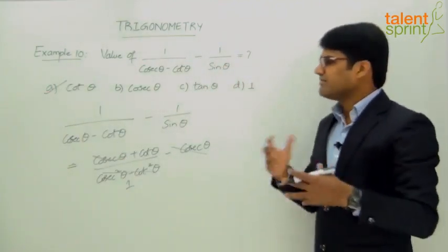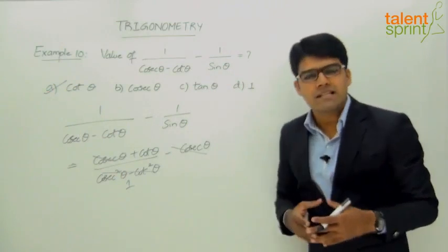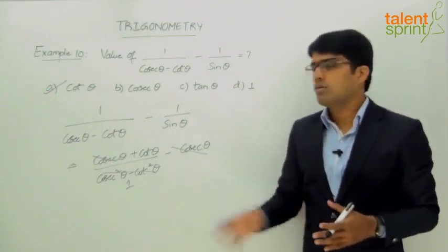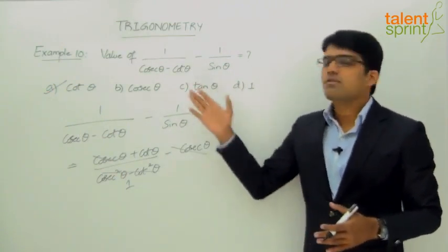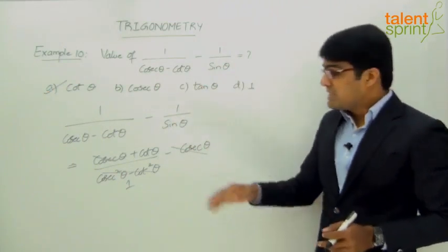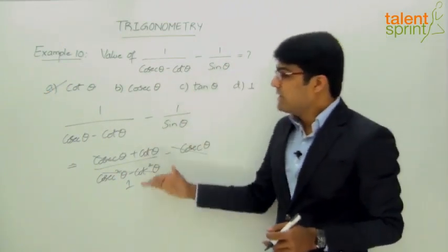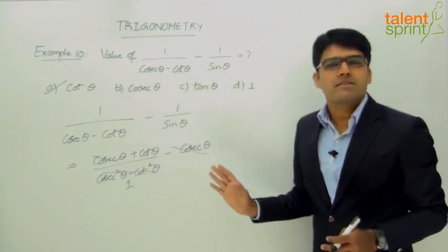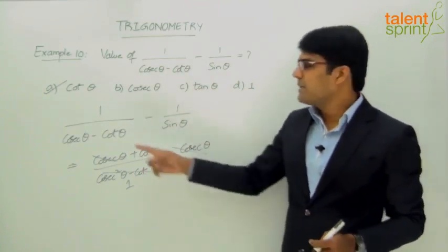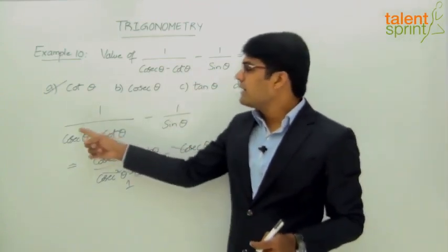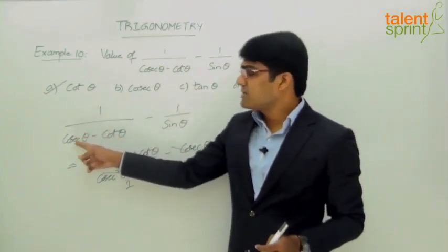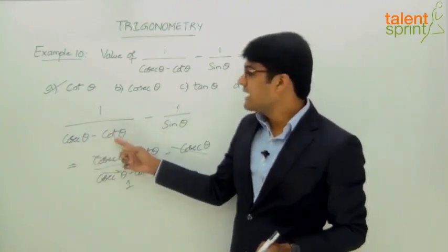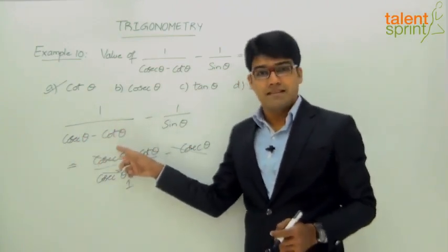Simply use algebraic and trigonometric formulae to find the required answer. This is not the only method. For example, 1 by cosecant theta can be taken as 1 by sine theta, and cot theta can be taken as cos theta by sine theta.